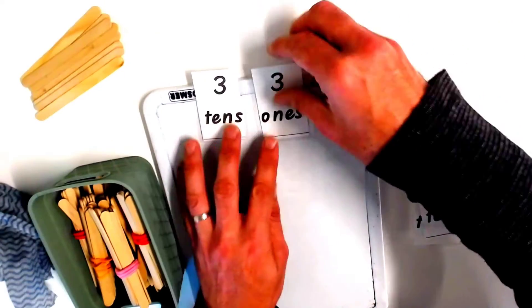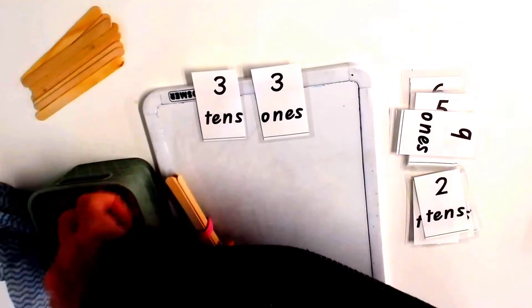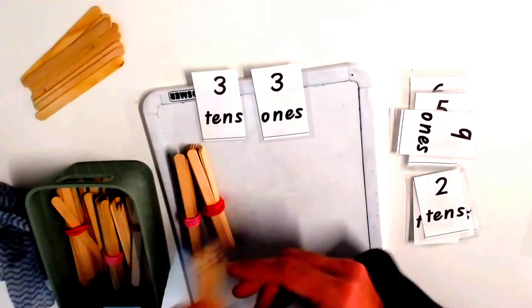Now I place the tens down and then the ones down. So I have three tens and three ones, which is 33.